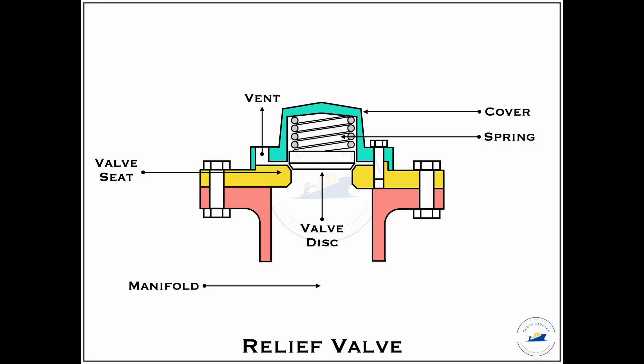Usually, the relief valve setting can be set at approximately 10% above the normal assumed value of the starting air manifold — that is the 30 bar distinct pressure. However, different manufacturers can, depending upon the size, volume, and capacity of the starting air manifold, line, and system, have different preset values for this particular assembly.